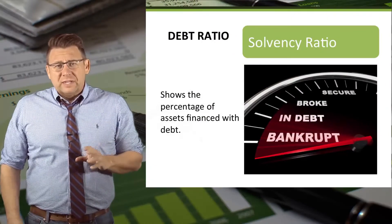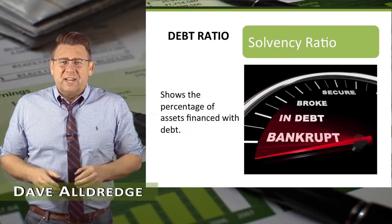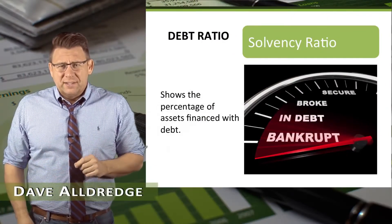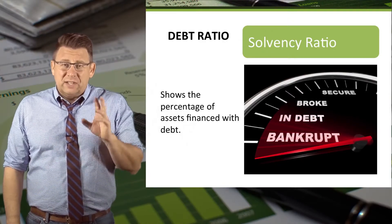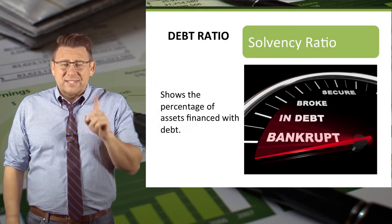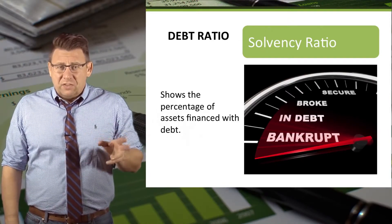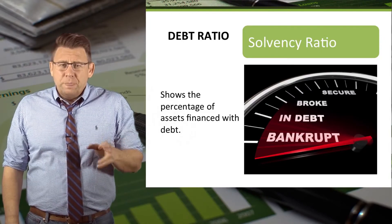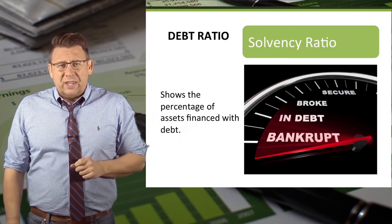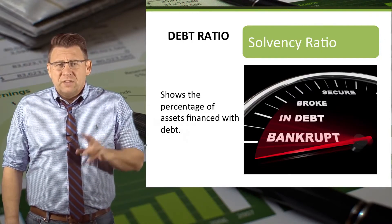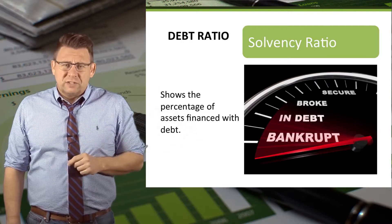The debt ratio tells us the proportion of assets financed with debt. A debt ratio of 0.5 means that debt finances half of the assets. The higher the debt ratio, the greater the pressure to pay interest and principal. The debt ratio is a measure of solvency.